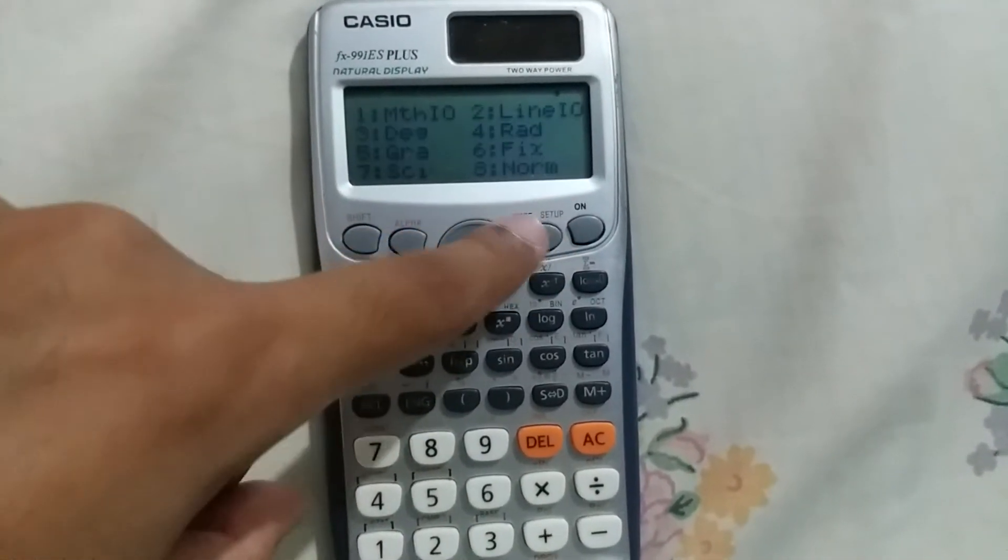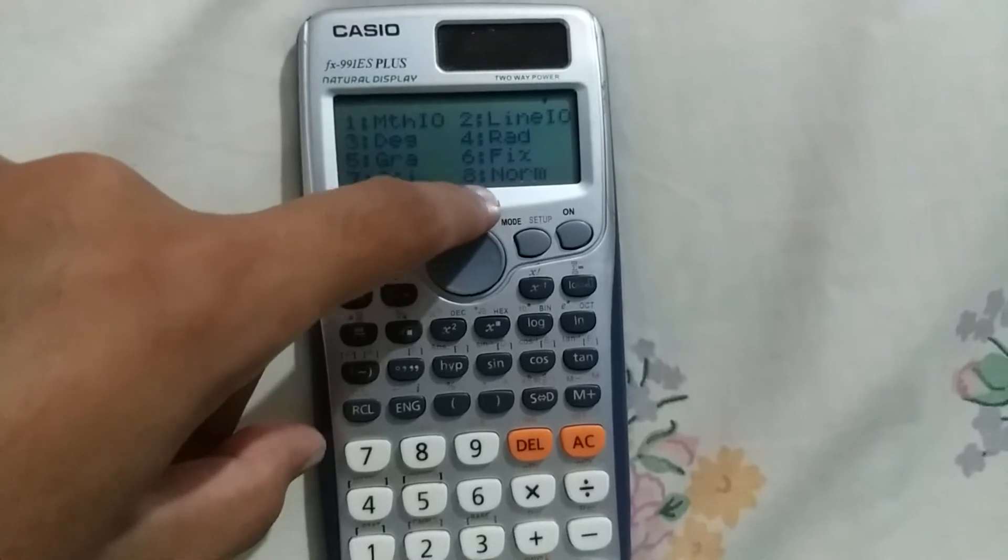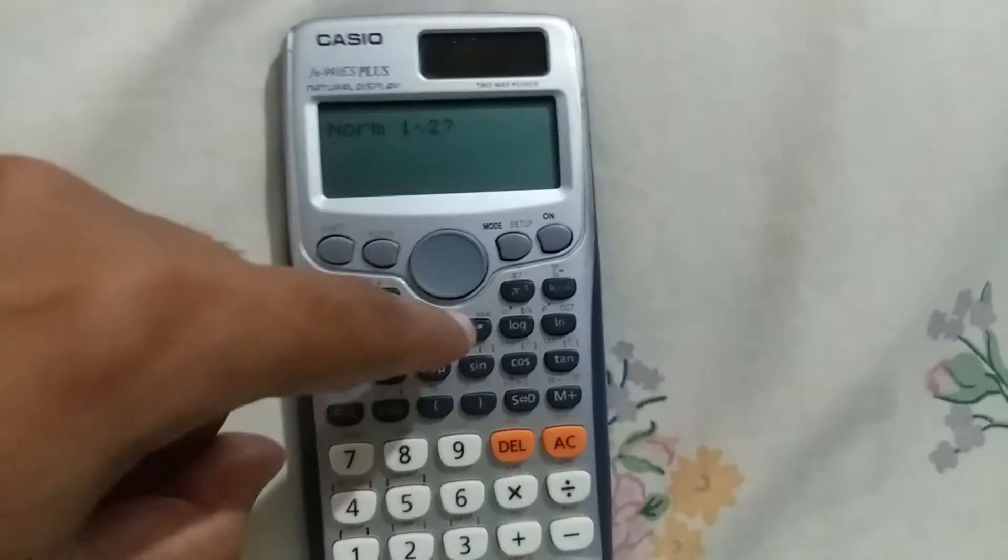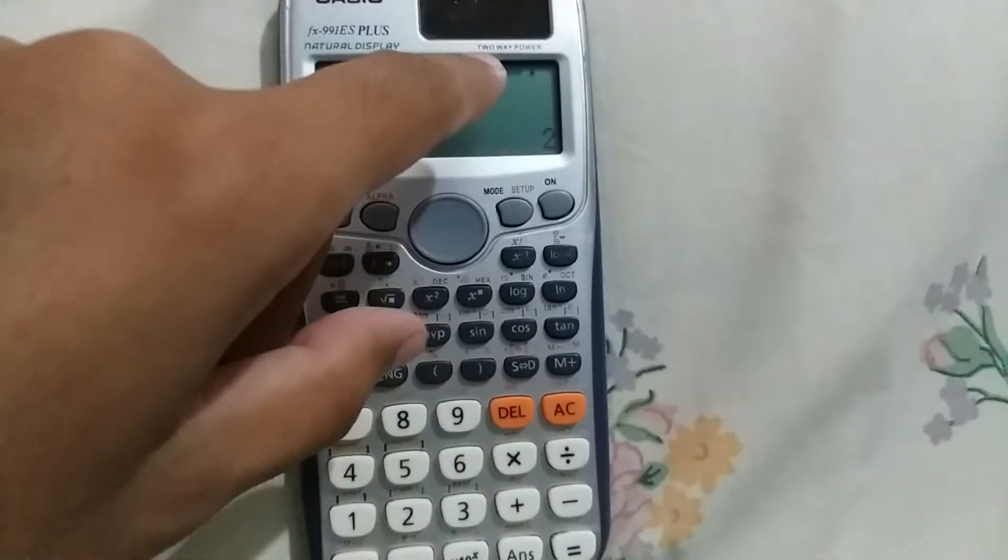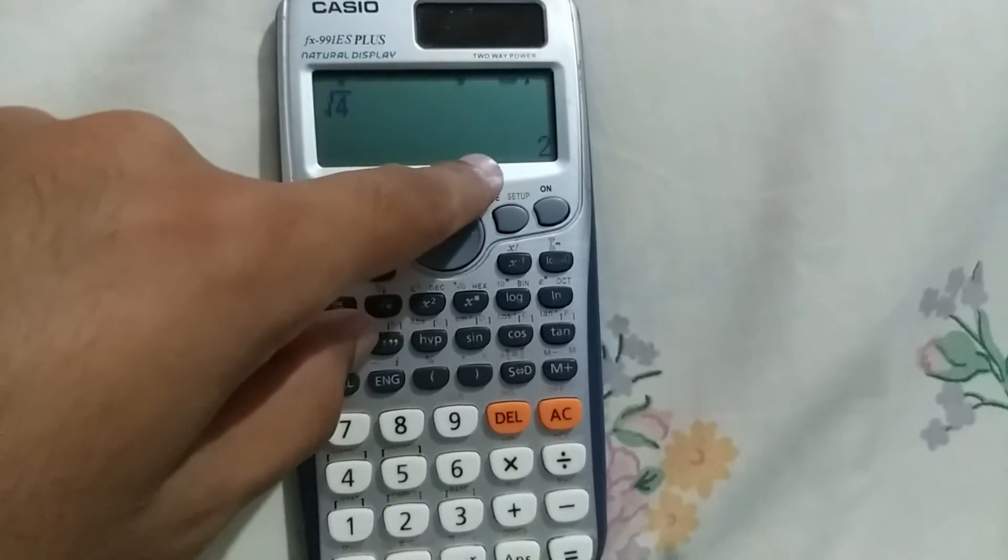Then press the mode button, then press the 8 button, then press the 1 button. Now you can see that my calculator has been converted to normal mode.